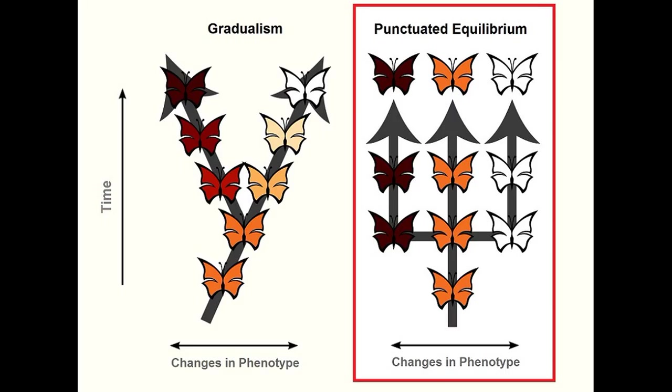In the late 1970s, Gould and Eldredge built upon Simpson's work to develop the theory of punctuated equilibrium. This theory posits that evolution can involve long periods of morphological stasis punctuated by geologically short bursts of adaptive evolution at the species level. But these relatively short bursts of evolution would still occur gradually over many generations. We won't go into this in detail here, since we already did a video on it — link in the description.